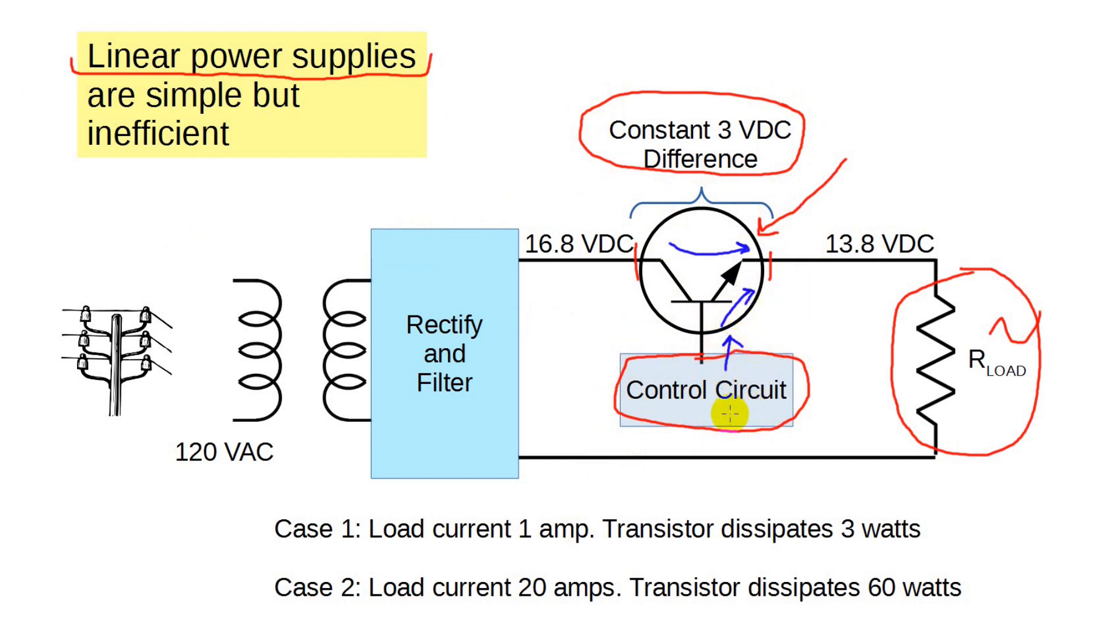Let's say one amp is being used by the radio load during receive, for example, and hence that one amp has to pass through the pass transistor. To get the power dissipated by the pass transistor, we multiply voltage times current, or in this case one amp times three volts, is three watts. Now, this is real heat and is dissipated by the pass transistor.